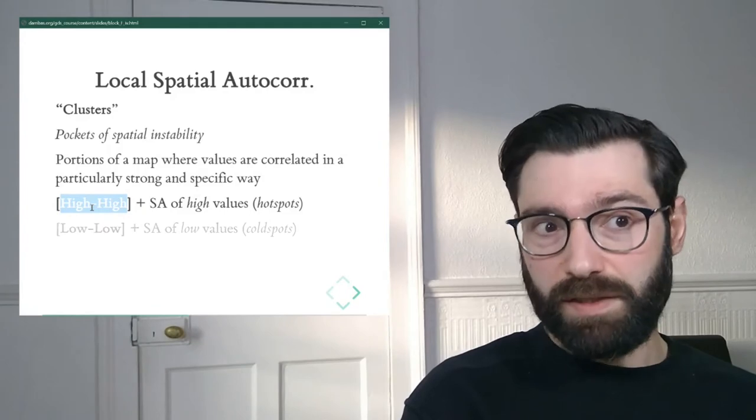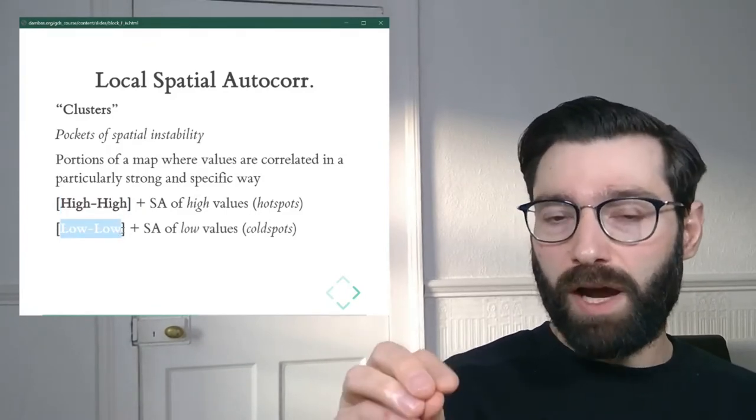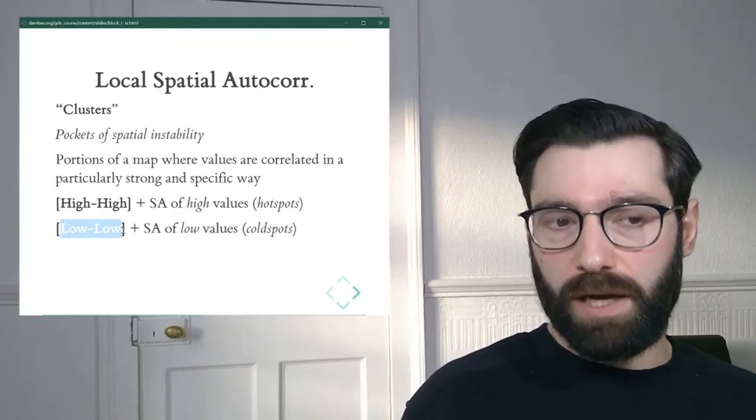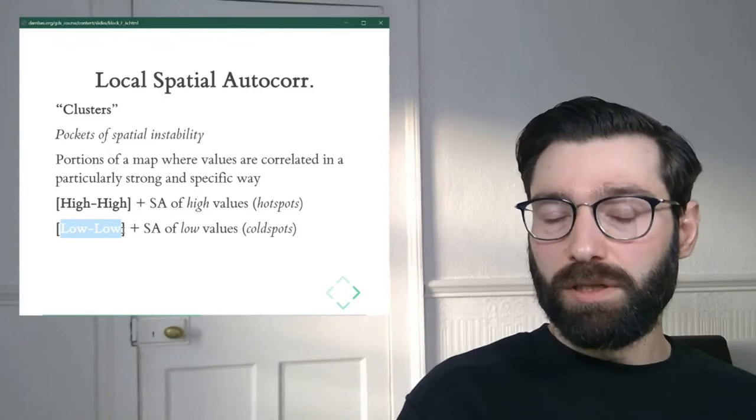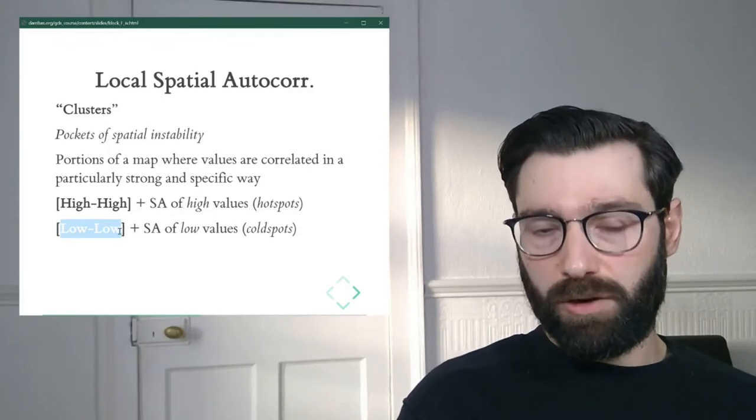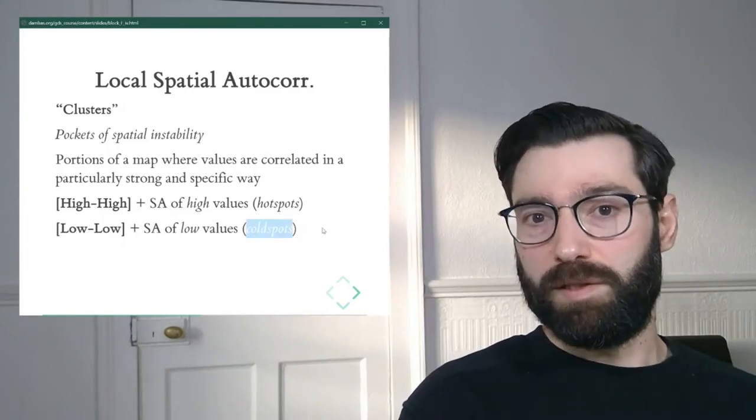But just as much would be the low-low case, where we have low values surrounded by low values. And this is, again, another example of local positive spatial autocorrelation. And you might also see this referred to in the literature as cold spots.